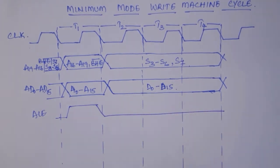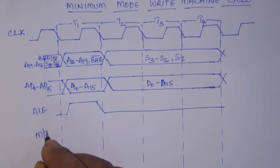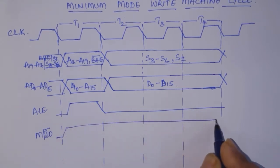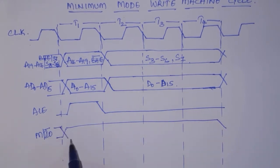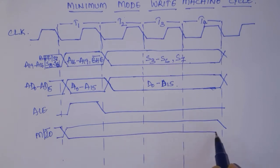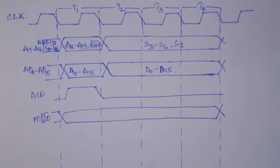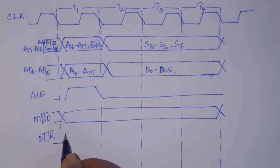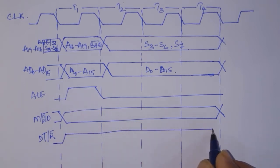Then Memory/IO bar: if it is a memory write cycle, this must be high for the entire machine cycle. If it is an IO write — that means data to an output device — then this must be low for the entire four T-states. Then DT/R bar (Data Transmit or Receive): because now it is transmit, the data is sent by the processor to the devices, so this signal is high for the entire four T-states.